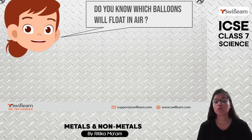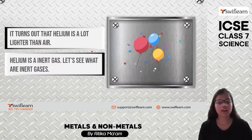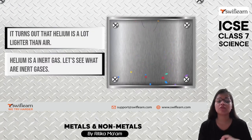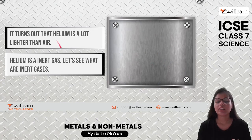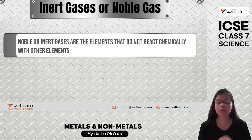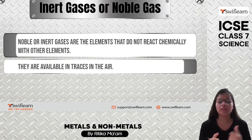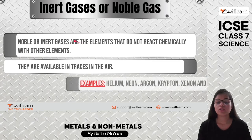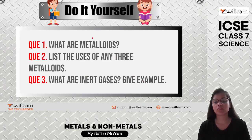Now, talking about inert gases — think about which balloon floats in the air. It is the helium balloon! Helium is lighter than air. Inert gases are gases that do not react chemically with other elements; they are also known as noble gases. They are available in very small traces in the air. Examples of inert gases are helium, neon, argon, krypton, xenon, and radon.